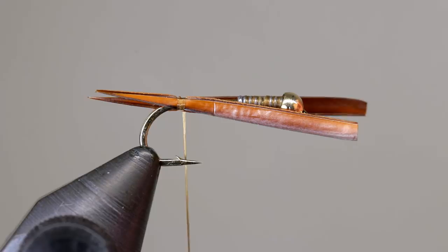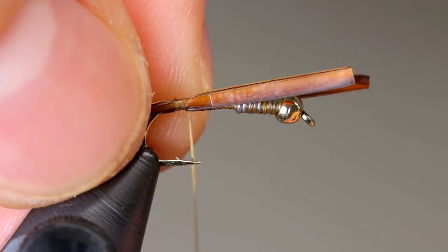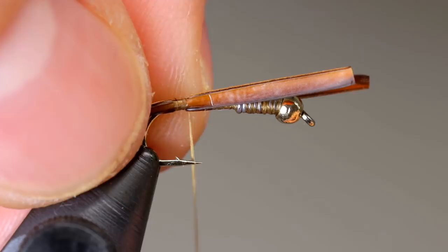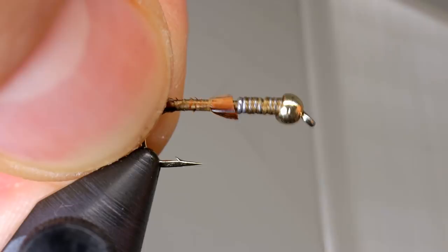If you need to make any adjustments, gently slide the biots back and forth until they are even. Take a couple more wraps so they don't move as easily, then cut the biots so they butt up against the lead wire. Secure the biots by moving your thread forward, ending at the lead wire.